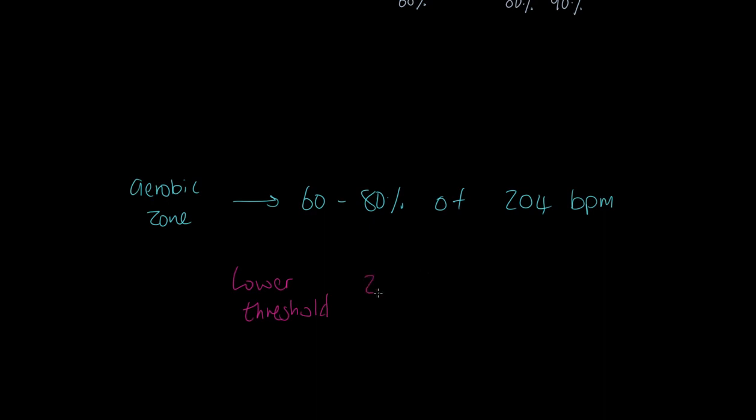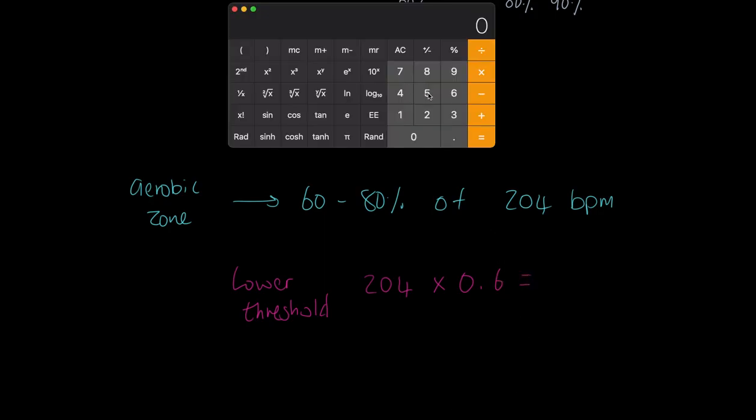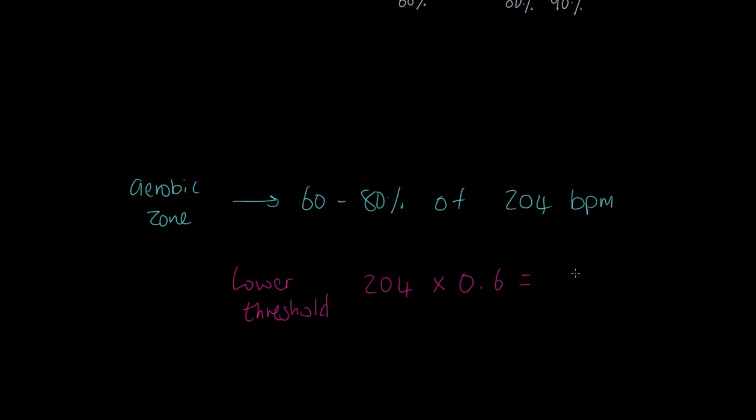So we can calculate this and what we can say is that the lower threshold, which of course is going to be the 60%, we can calculate this by saying right, we've got 204 beats per minute multiplied by 0.6, which is of course 60%, and we can calculate that. We can say 204 multiplied by 0.6 equals, and it gives us a value of 122.4, rounded down to 122 beats per minute.